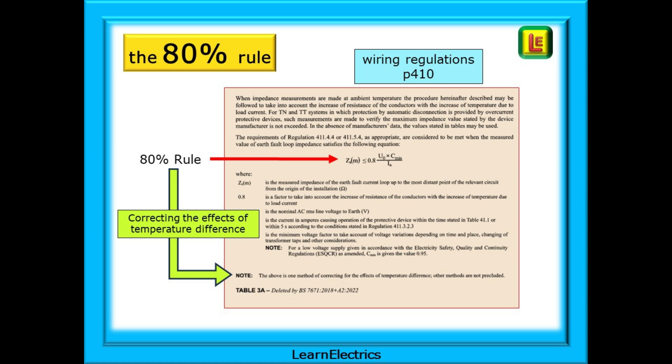Looking at the formula, U0 multiplied by C min and divided by IA gave us the tabulated value of ZS as in the wiring regs book and then multiplying by 0.8 gives us ZS measured as shown in the on site guide.